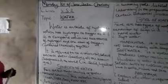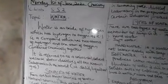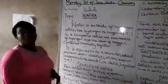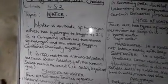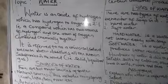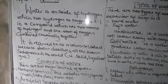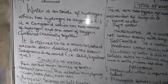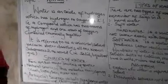Water is an oxide of hydrogen, which has hydrogen to oxygen in the ratio of 2:1. It is a compound which has 3 atoms of hydrogen and 1 atom of oxygen combined chemically together. It is referred to as the universal solvent because water dissolves all the known substances in the world — that is, solids, liquids, and gases — and that is why it is referred to as such.